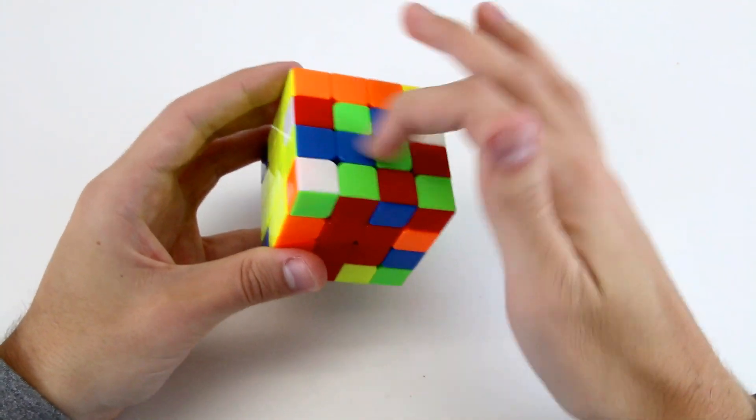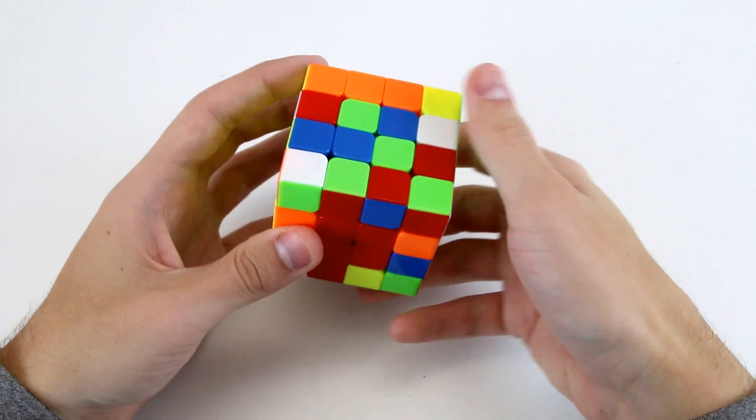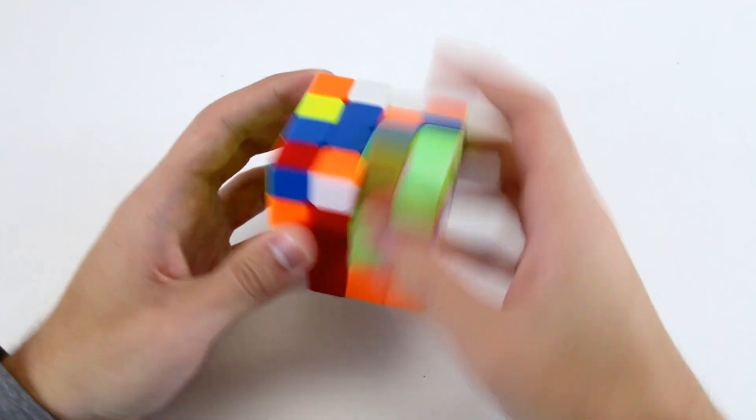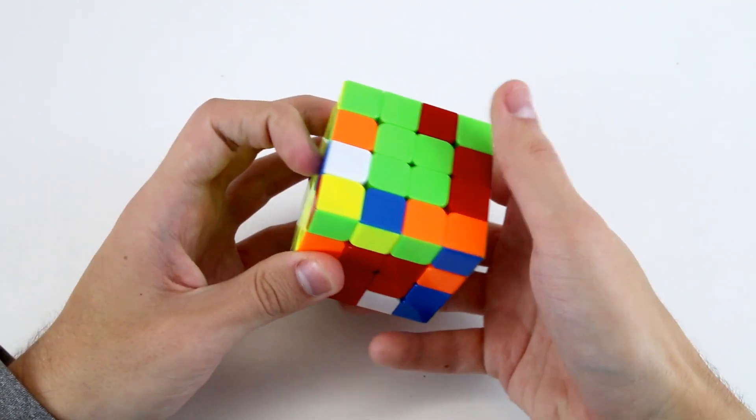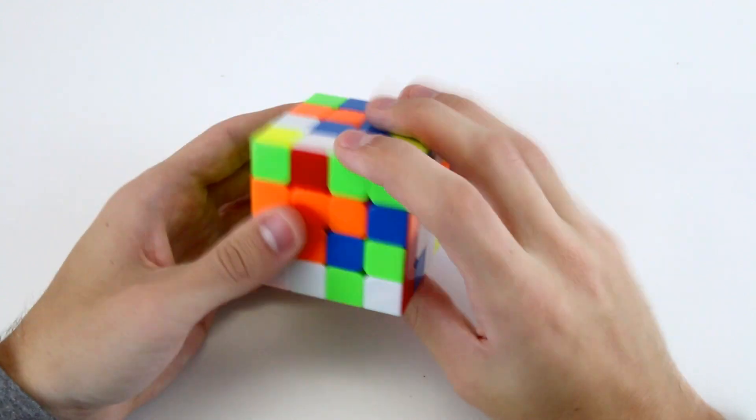And then I need to solve the green center pieces onto the top here. I've got these two green ones down here, and these two up here. So I can pair these up like that, and then do R2, U2, R2, and then shift that to the bottom. And then my last two center cases is very straightforward.